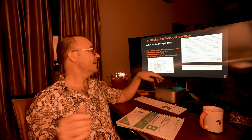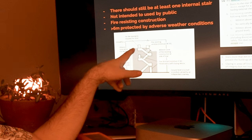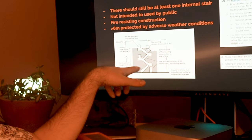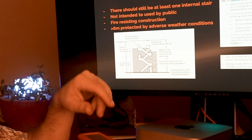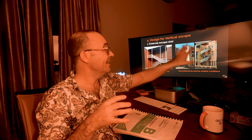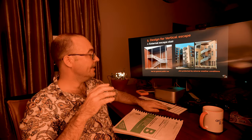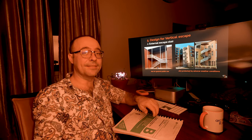There are external escape stairs as well. Usually you need to have at least one internal escape stair if you have an external escape stair open. There are also areas around the escape stair that need to be protected — you're not allowed to have windows within certain distances, as shown in this document. It's got to be protected from adverse weather conditions, and these external stairs are not for public use — they're only used in the event of a fire.